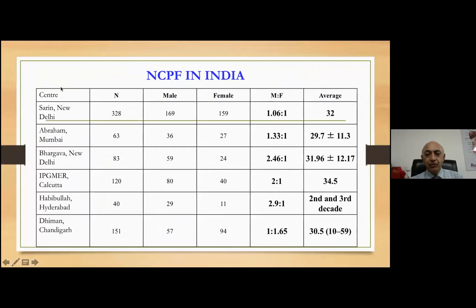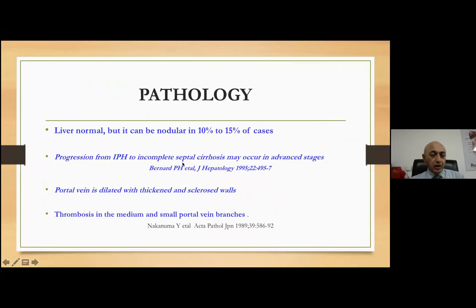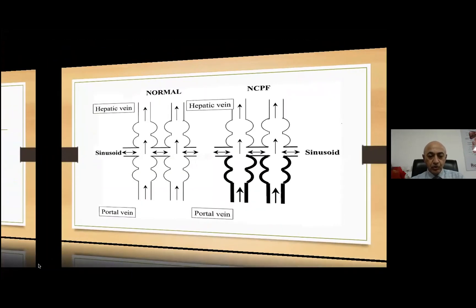In NCPF in India, multiple series have been published from almost all parts of the country. It is a male-predominant disease, typically occurring in the age group of 29 to 30 years, leading to development of portal hypertension. Pathologically, the liver is small in patients who have a nodular type of NCPF. There is progression of portal hypertension in late stages resulting in so-called nodular non-cirrhotic portal fibrosis.